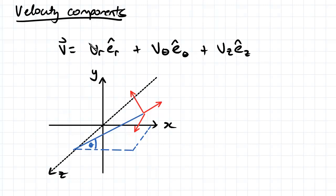Now, vr is the radial velocity, vtheta is our tangential velocity, and vz is our axial velocity.